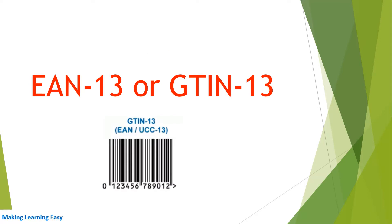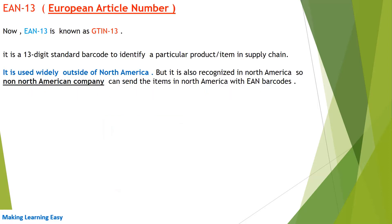Now let's see EAN-13, also known as GTIN-13. I have attached a barcode screenshot of GTIN-13 — you can see it is of 13 digits. EAN-13 is a 13-digit standard barcode used to identify a particular item in the supply chain. It is used widely outside of North America but is also recognized in North America.